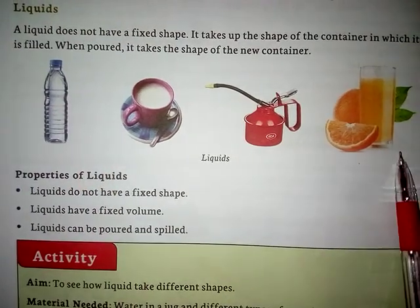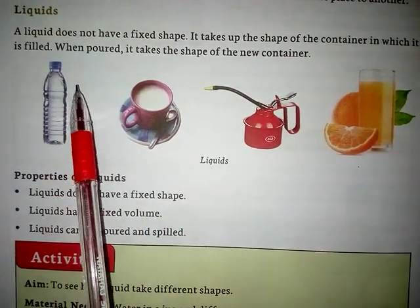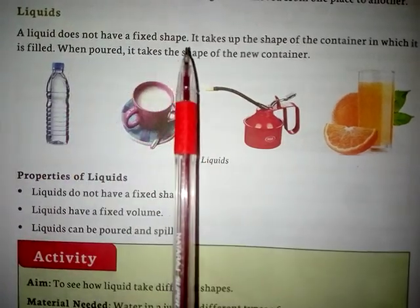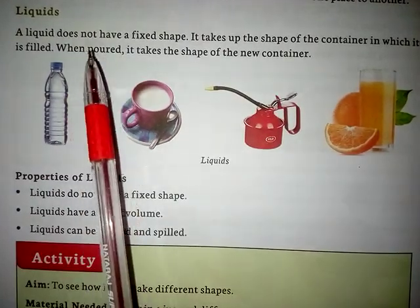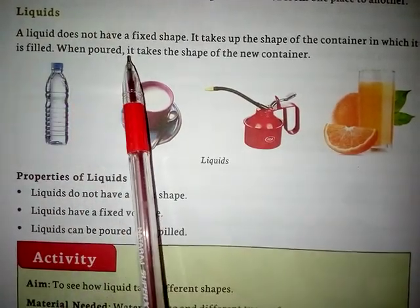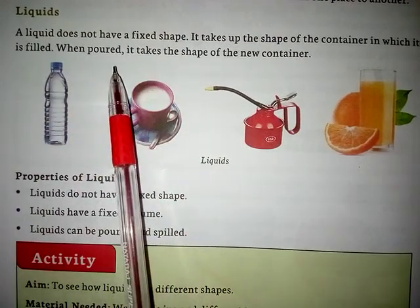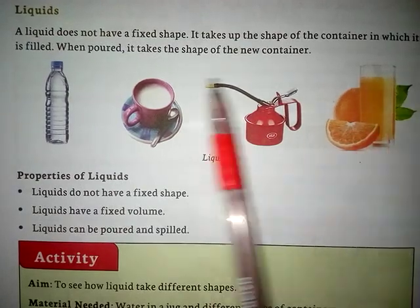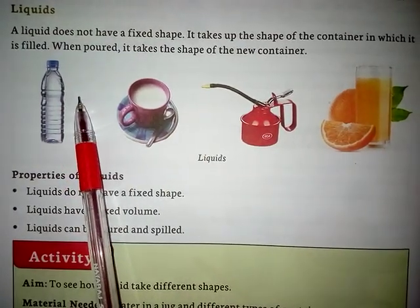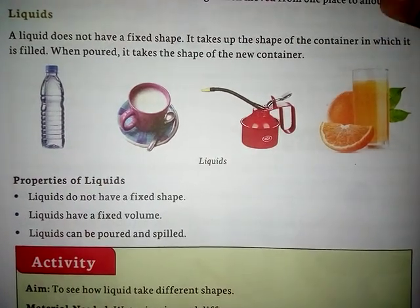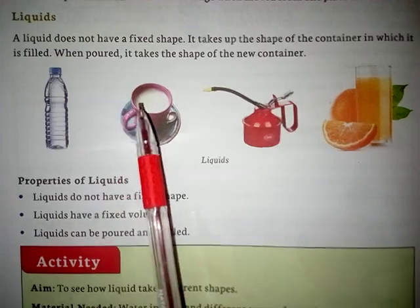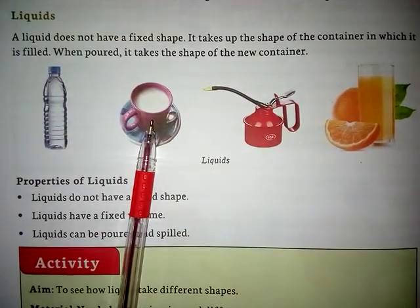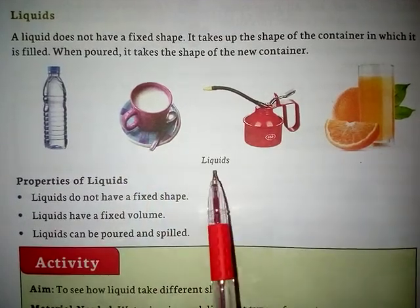Now we will know about liquids. What are liquids? A liquid does not have a fixed shape. Liquid ka jo shape hota hai woh fixed nahi hota. Abhi aapne padha — solid ka shape kaisa hota hai? Fixed hota hai. Lekin liquid ka shape, yaani unka aakaar, fixed nahi hota. It takes up the shape of the container in which it is filled. Yeh usi cheez ka aakaar le lete hain, usi bartan ka aakaar le lete hain jisme inko rakha jaata hai. When poured, it takes the shape of the new container.